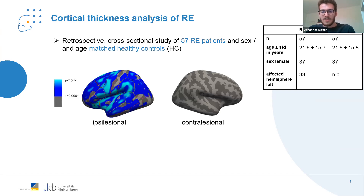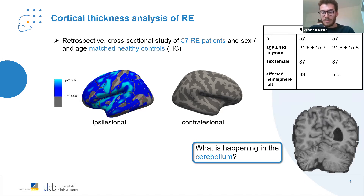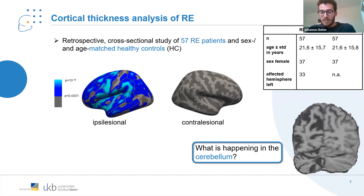Something we noticed while looking at individual MRI scans was that not only the cerebrum was affected, but there are also cases in which the cerebellum seemed to be affected as well. In this patient, the cerebellum on the contralesional side seems to be following the neuroanatomic connection between cerebrum and cerebellum. In other cases we've seen the ipsilesional cerebellum is affected.